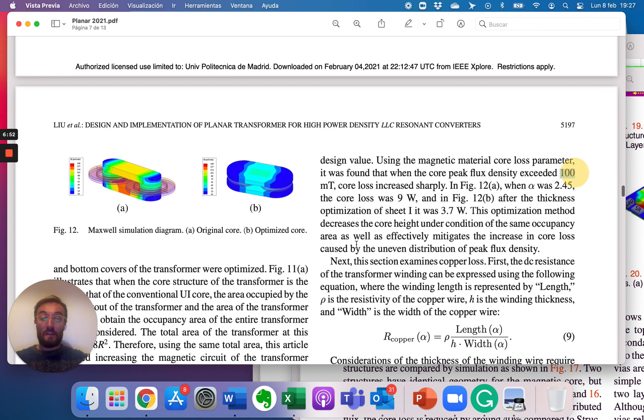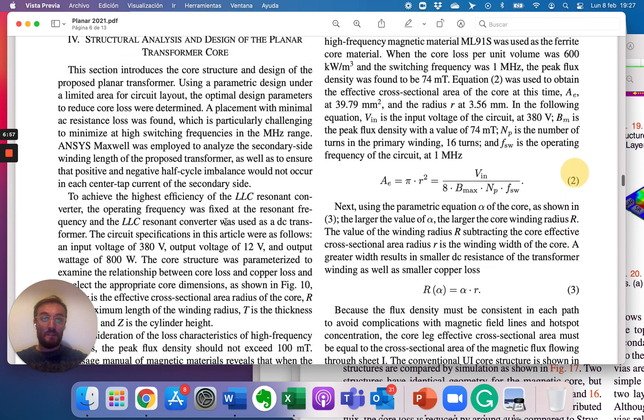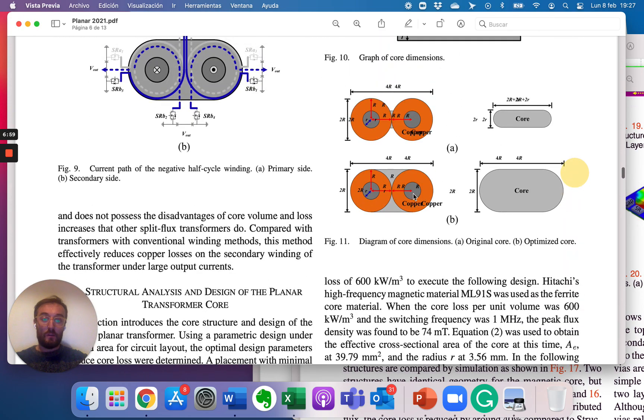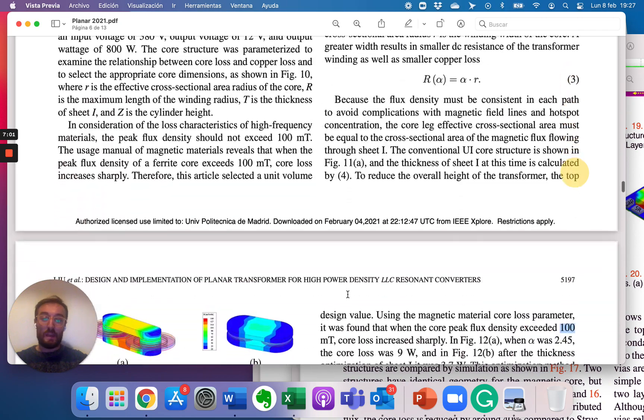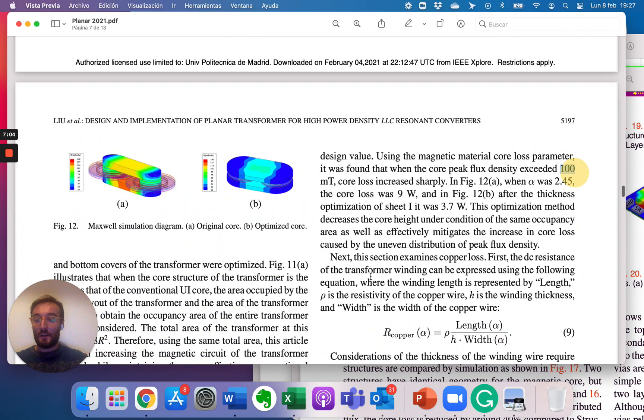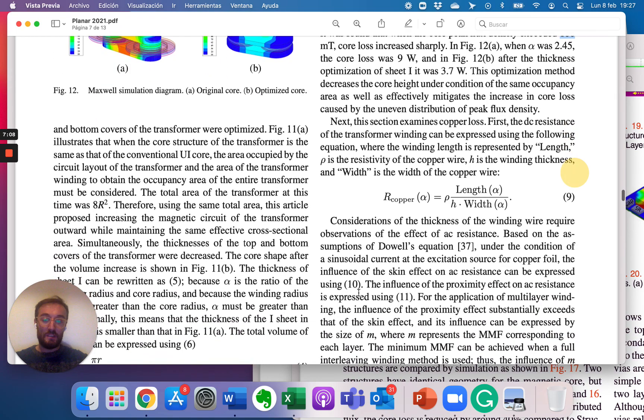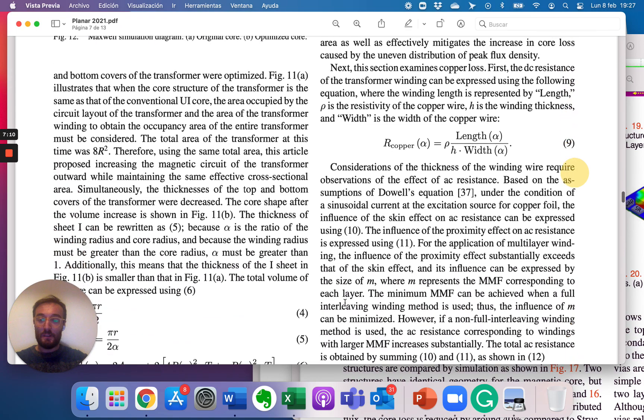Then they have to make some calculations for changing the core area. This area of the cross section of the leg. And then they are able to get 3.7 watts, because they reduce the losses by changing the area.